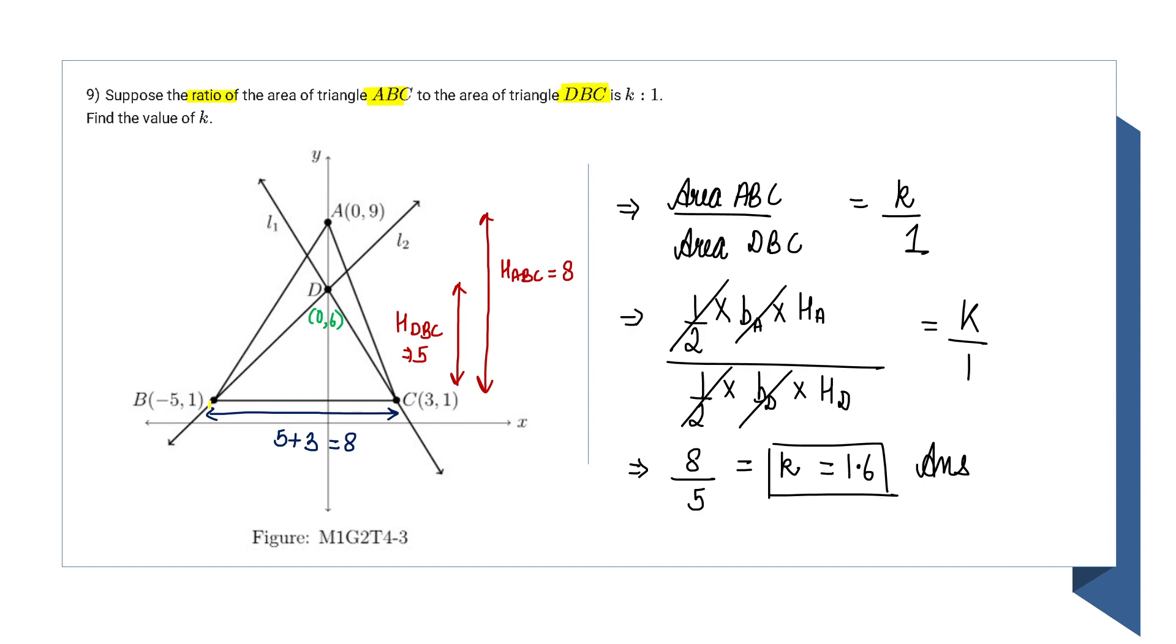ABC and BDC both have the same base, so base and base get cancelled out, half and half get cancelled out. So area ABC upon area DBC will equal height of A upon height of D.